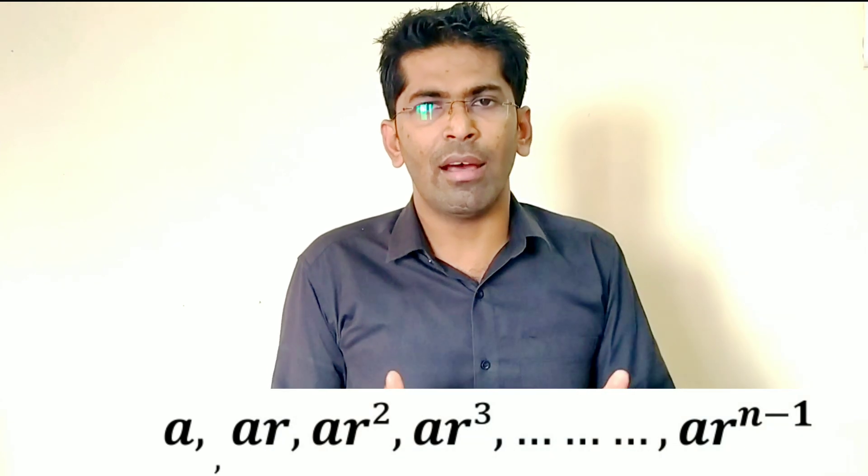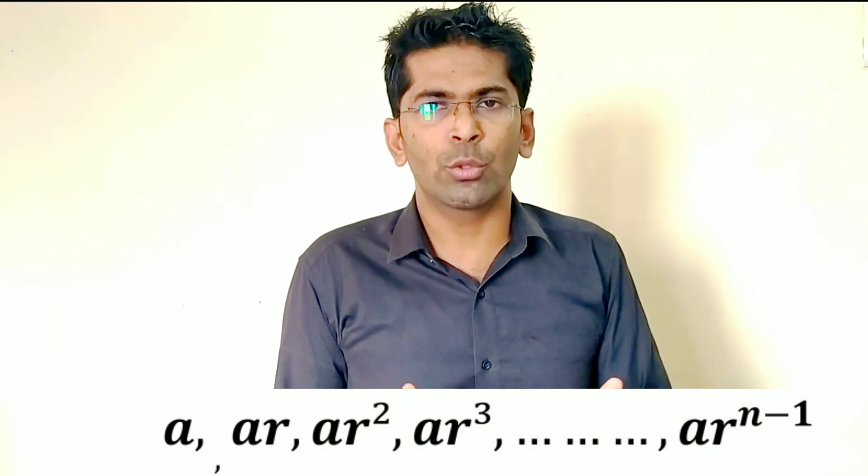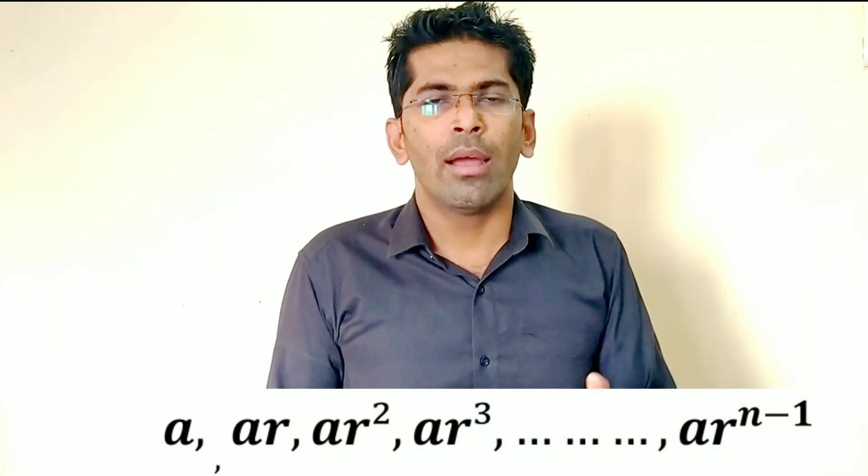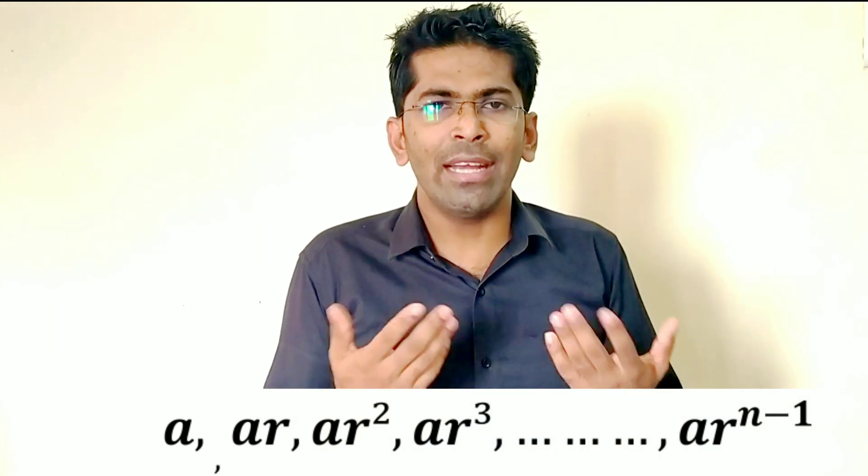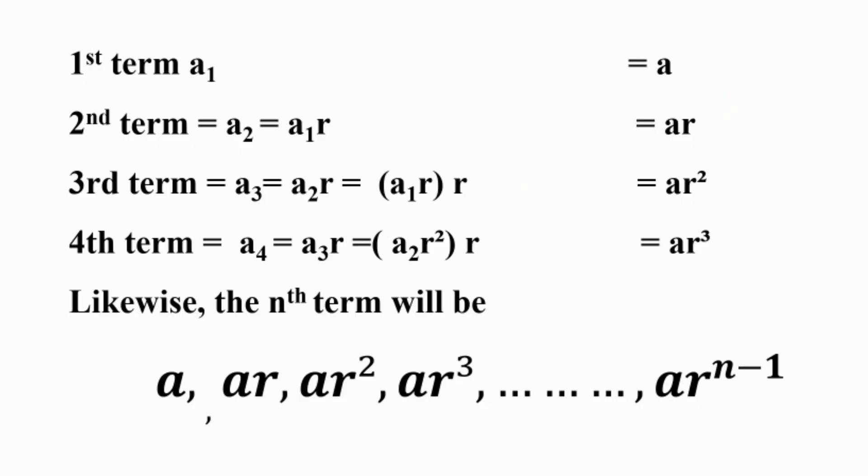If the first term of the sequence is A, then the geometric progression is A, AR, AR², AR³, where the nth term is A·R raised to the power n minus 1.